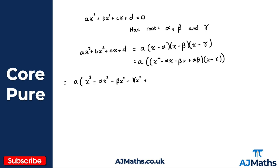We're going to get plus alpha beta x, plus alpha gamma x, plus beta gamma x, and then finally minus alpha beta gamma. You might get these terms in a slightly different order, that's absolutely fine, but I've put them in this order for a reason which you'll see in a moment.